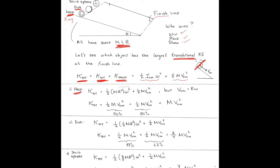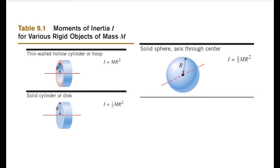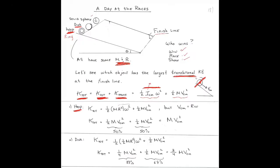I want to look at the hoop — that's the ring that goes down the incline. The rotational kinetic energy is one-half moment of inertia times the angular speed squared. There's a table in the book with a list of the moment of inertia for different shapes. For a ring, all of the mass is as far away from the axis of rotation as you can get.